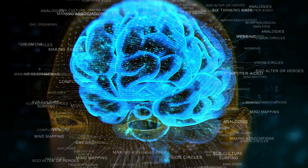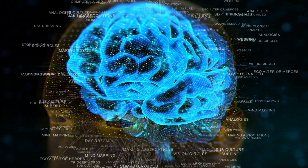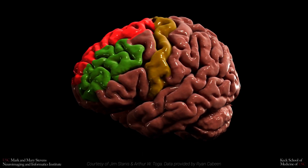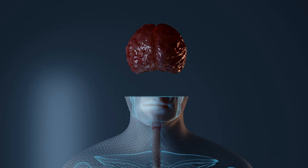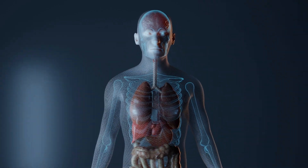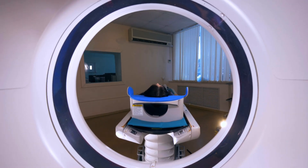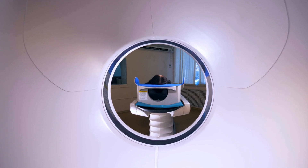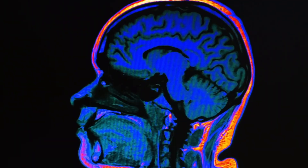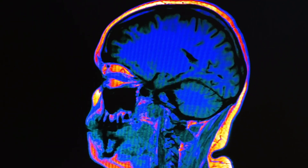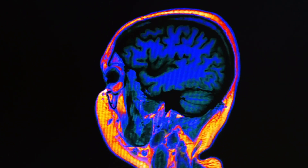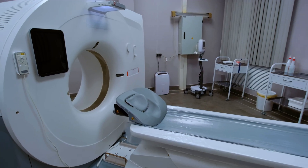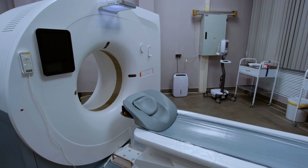The brain is a dynamic, complex organ that controls thought, memory, emotion, touch, and every process that regulates our bodies. Neuroimaging technologies allow us to examine the brain structure and function of living humans, offering tremendous insights into how the brain differs between healthy people and disease patients.